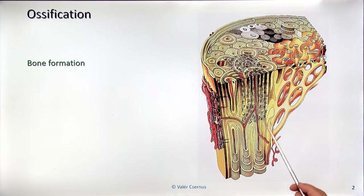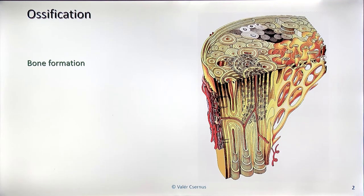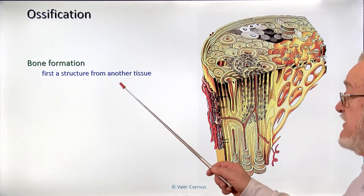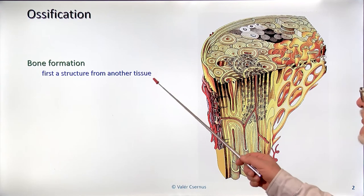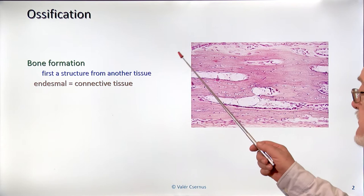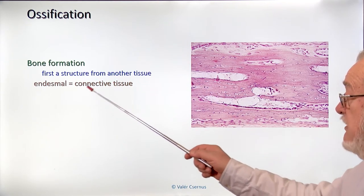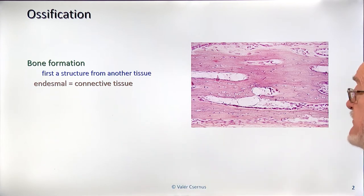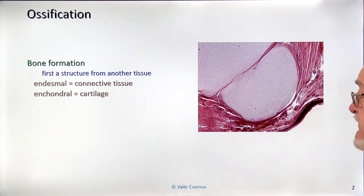As you know, the bones are hard tissue and they cannot develop in a usual way directly from mesenchyme because of the hardness — it cannot increase from inside. First, a soft tissue will develop from another tissue and that will be transformed to bone. Depending on what is the primary tissue, if it's connective tissue, we talk about the endosmal or intramembranous ossification, and when the first tissue is a cartilage, we talk about the enchondral ossification or cartilaginous ossification.